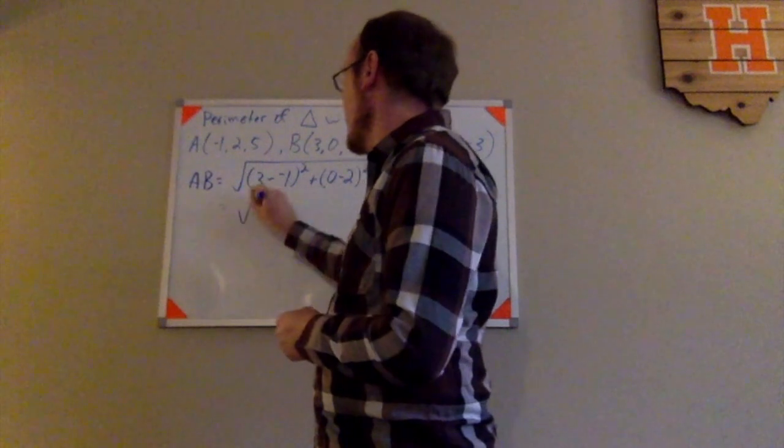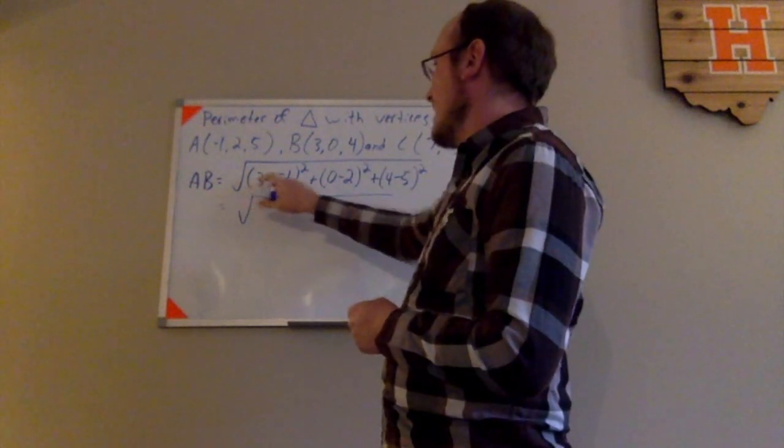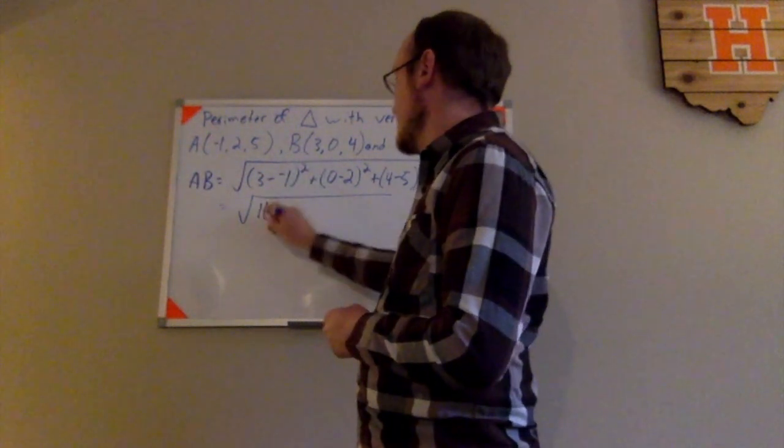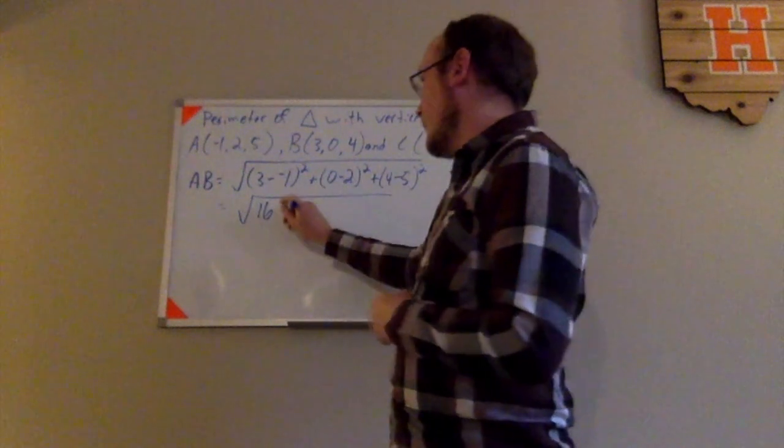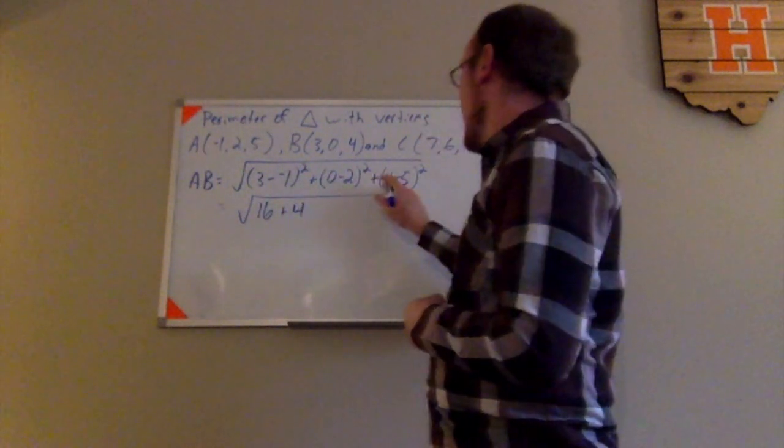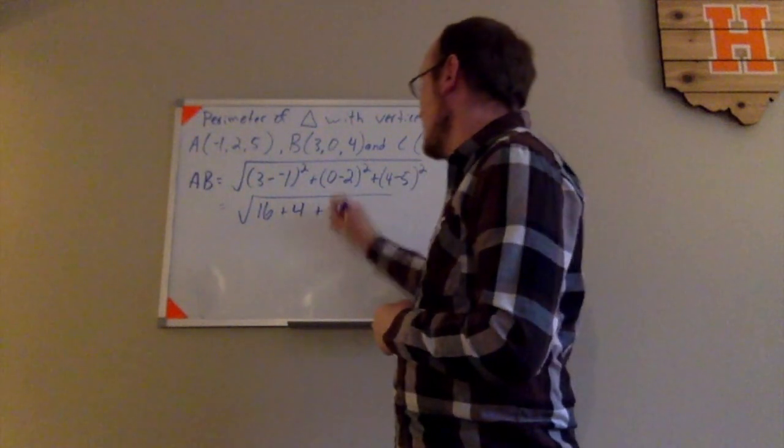Simplifying that a little bit, I have the square root of 3 minus negative 1 is 4. 4 squared is 16. 0 minus 2 is negative 2. Negative 2 squared is 4. And here I have 4 minus 5, which is negative 1. Negative 1 squared is positive 1.